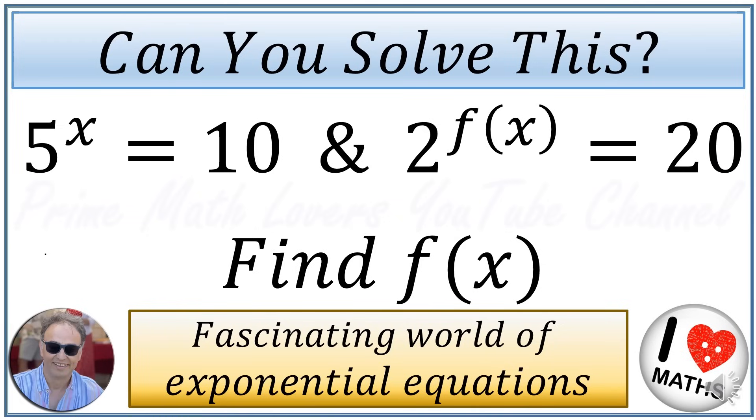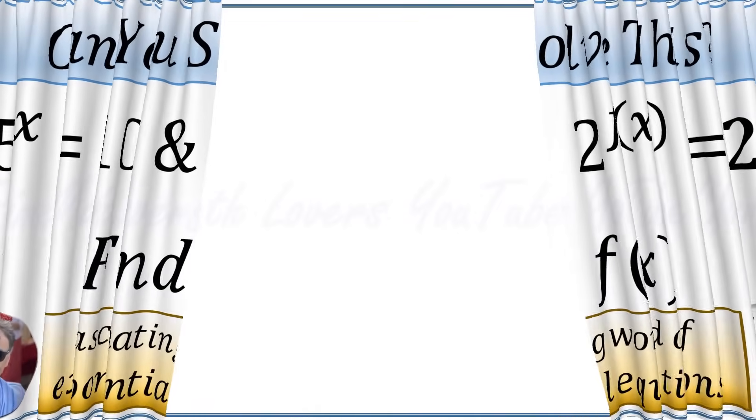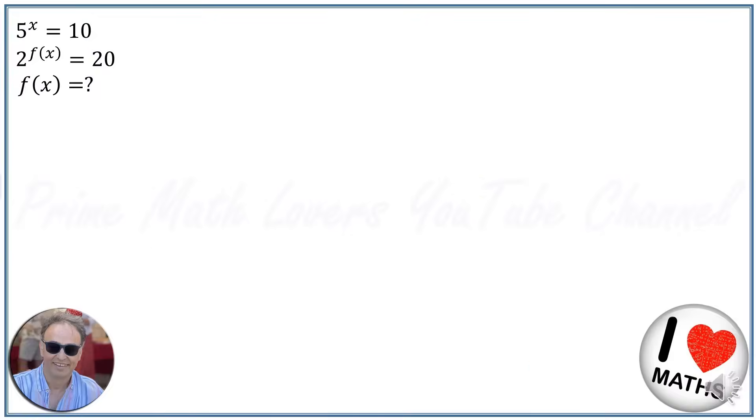First step: we've got this equation 5^x = 10. We take the logarithm base 5 of both sides and we get log₅(5^x) = log₅(10). According to the exponent rule of logarithms, log(a^n) = n·log(a).